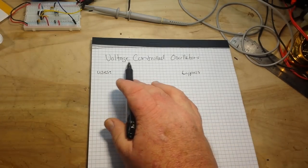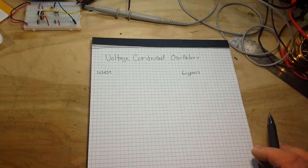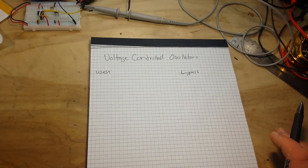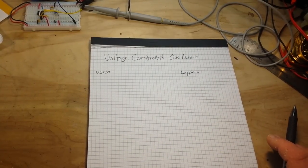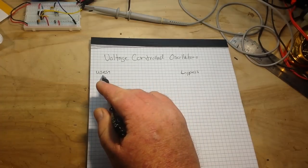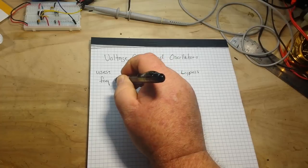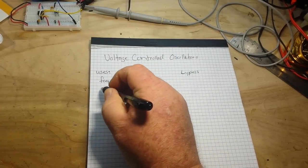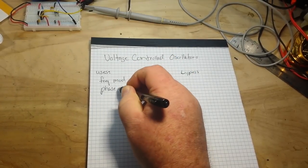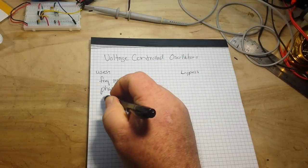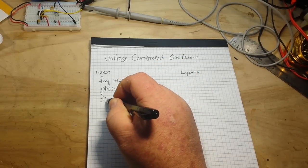So we're back and today we are going to talk about voltage controlled oscillators, VCXOs. You're going to find them in a lot of circuits. So first of all, what are they used for? Well, they are used in frequency modulation, phase modulation, and electronic music such as synthesizers.